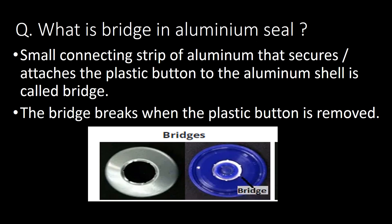What is the bridge in an aluminum seal? The small connecting strip of the aluminum seal that secures or attaches the plastic button to the aluminum shell is called the bridge. The bridge breaks when the plastic button is removed. You can refer to the photograph below to understand the design of the bridge in an aluminum seal.